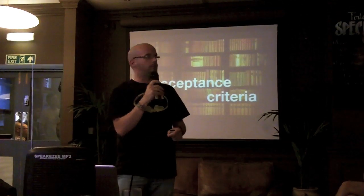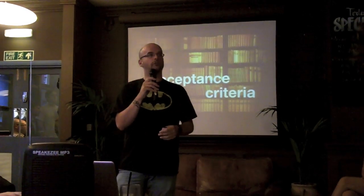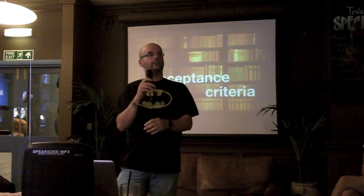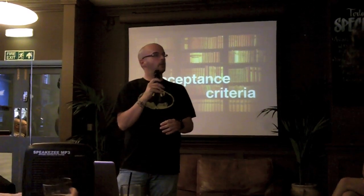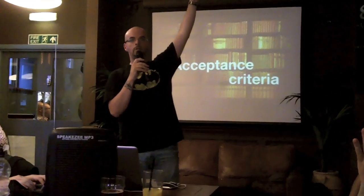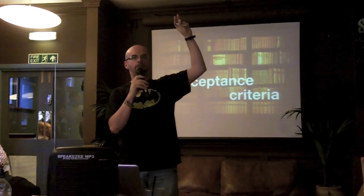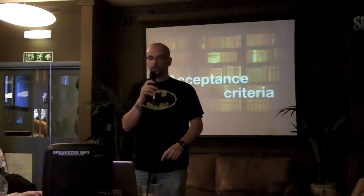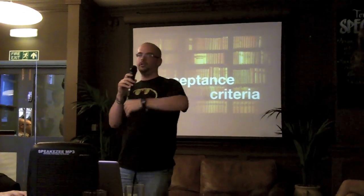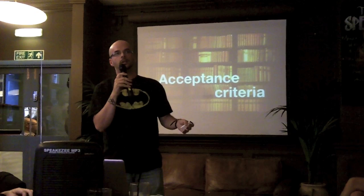The other part of a user story that often gets forgotten is acceptance criteria. Who writes acceptance criteria on their story? Who writes more than two acceptance criteria? This is how we know when the story is done. If there is no acceptance criteria, you have no idea when the story is done.